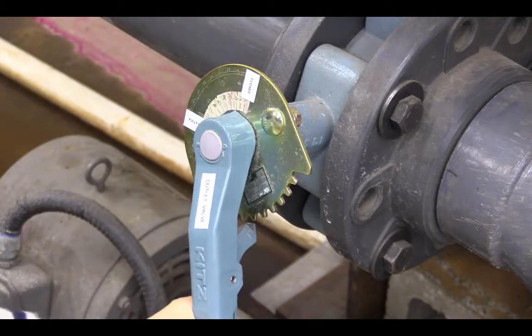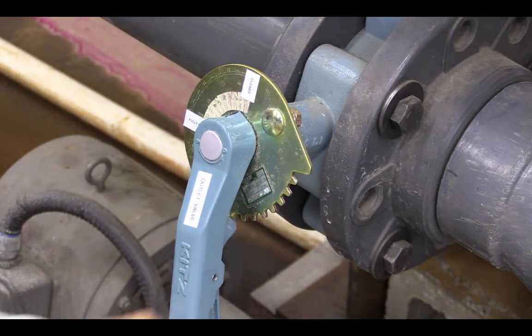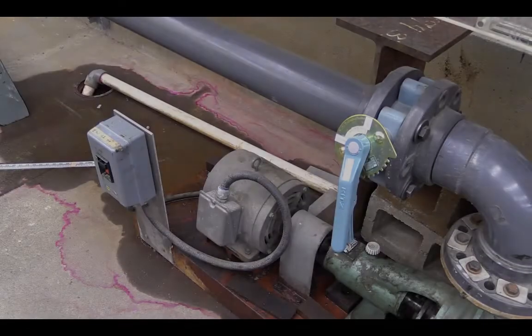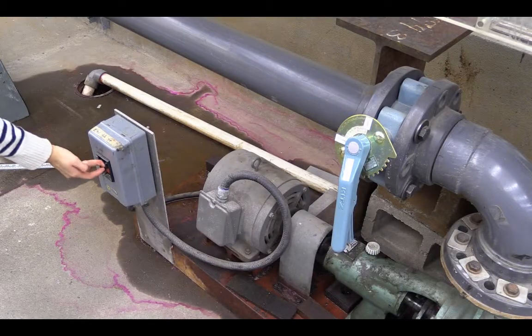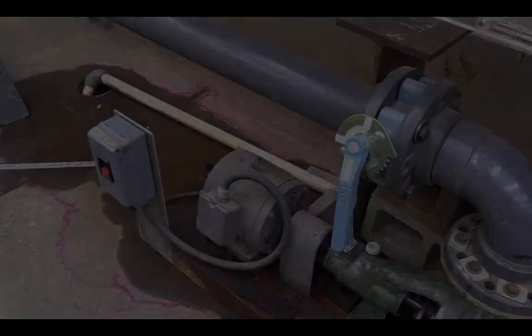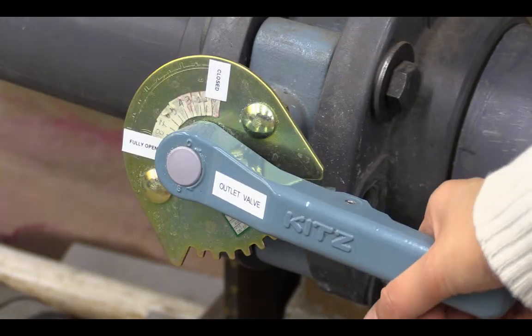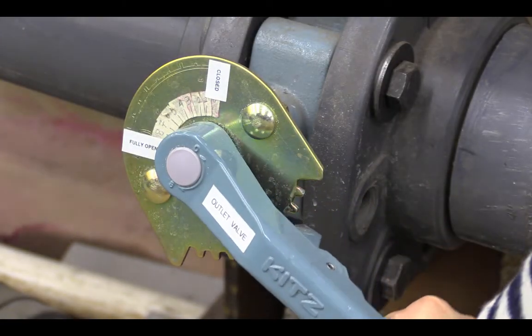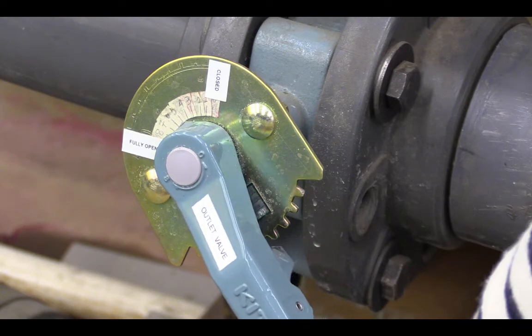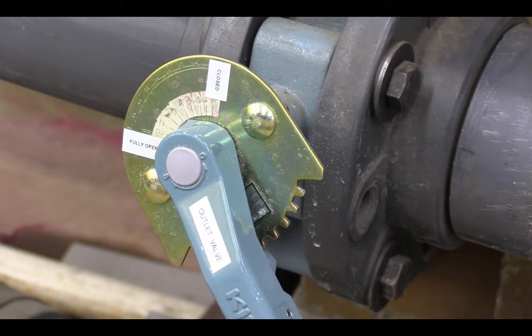Check that the outlet valve of the pump is closed and turn on the pump. Open the outlet valve to four ticks on the valve in order to set the depth upstream of the weir to roughly 30 centimeters.